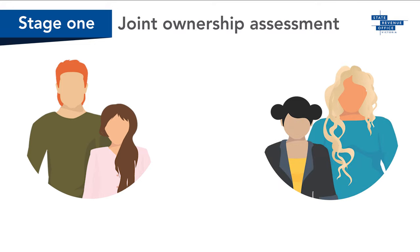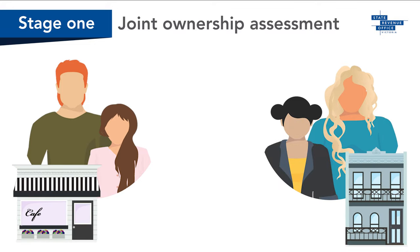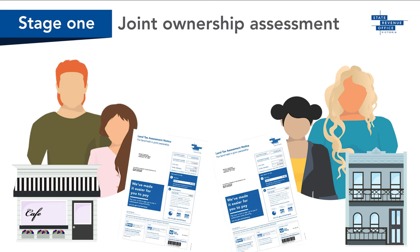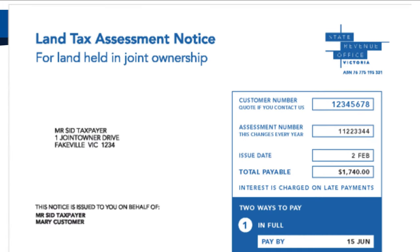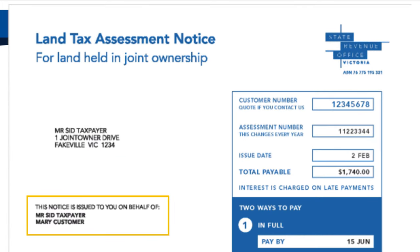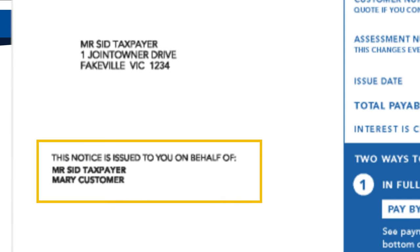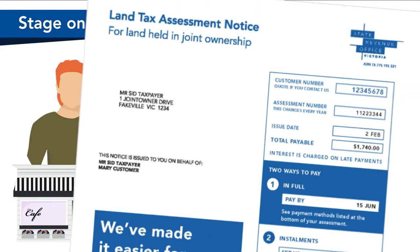We assess joint owners for land tax in three stages. In stage one, we assess each unique joint ownership on all the taxable land owned by that particular combination of owners. If the joint ownership is liable for land tax, we will issue a joint ownership assessment and send it to one of the joint owners on behalf of all the owners.